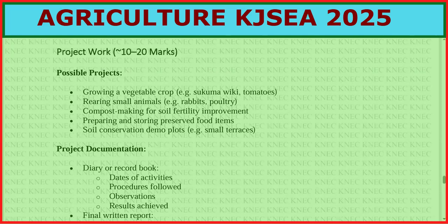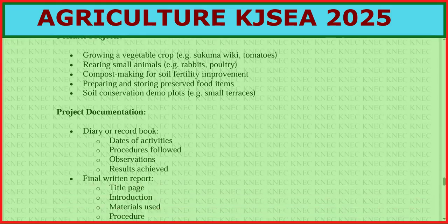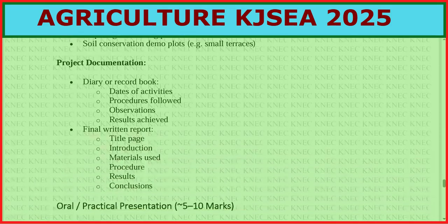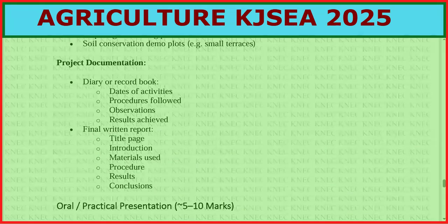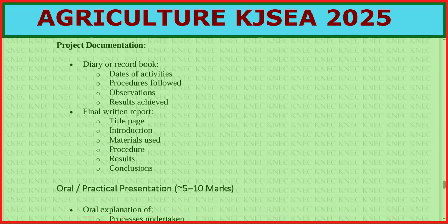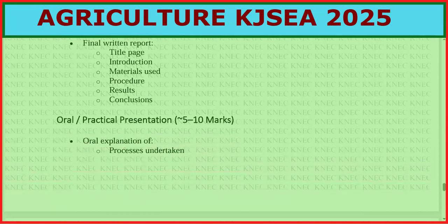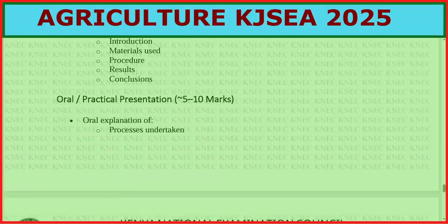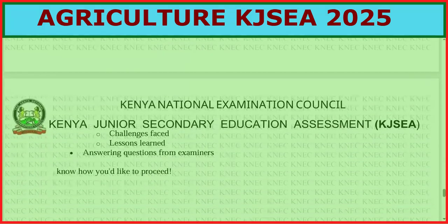Project documentation includes a diary or record book covering activities, procedures followed, observations, and archived resources. The final report should have a title page, introduction, materials used, procedure, and results. Also prepare an oral explanation of processes undertaken, challenges faced, and lessons learned for answering questions from examiners.